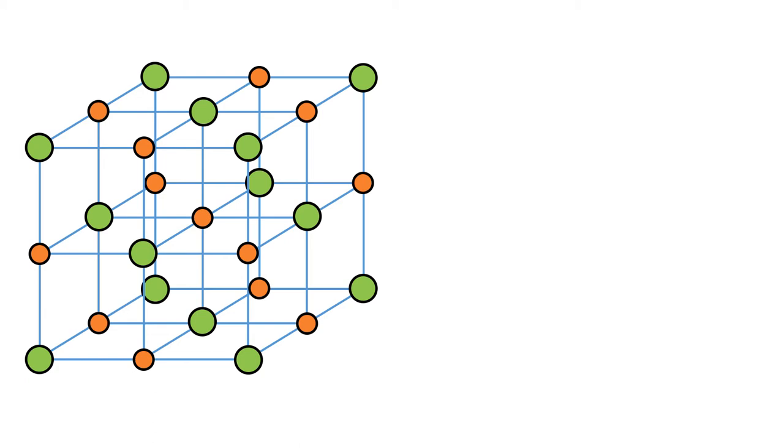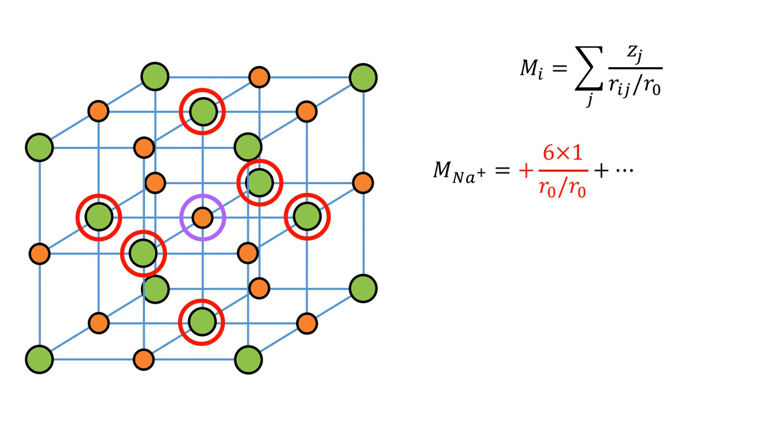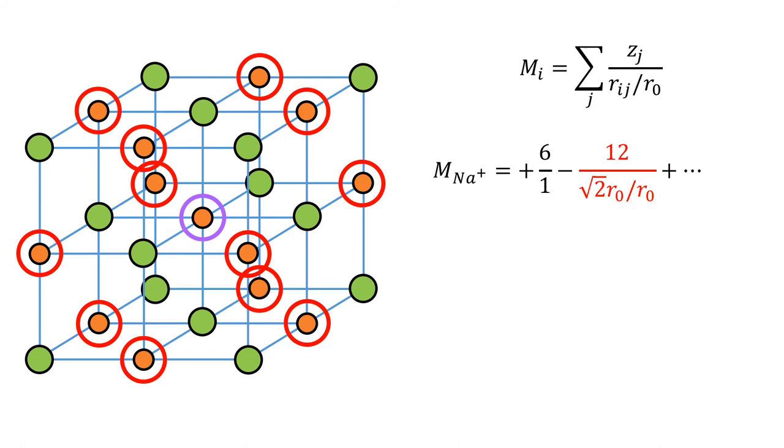In the case of a three-dimensional lattice, if we take a central sodium cation, the Madelung constant is given as the sum of the charges Z at a given distance from the nominal ion normalized to R0. A positive sign means an attractive interaction, while a negative sign means repulsive. The central cation has six nearest neighbor anions, so we have 6 over R0 normalized to R0, which is 1.